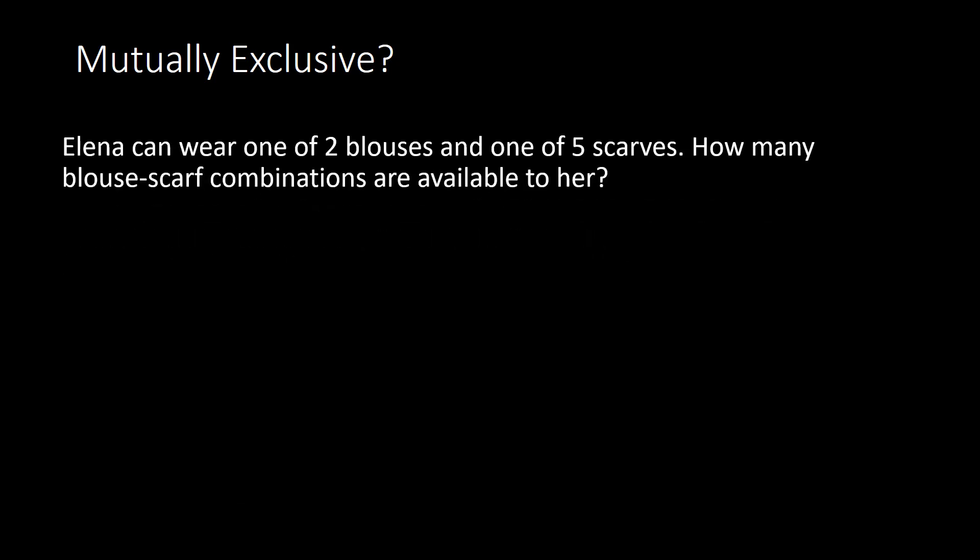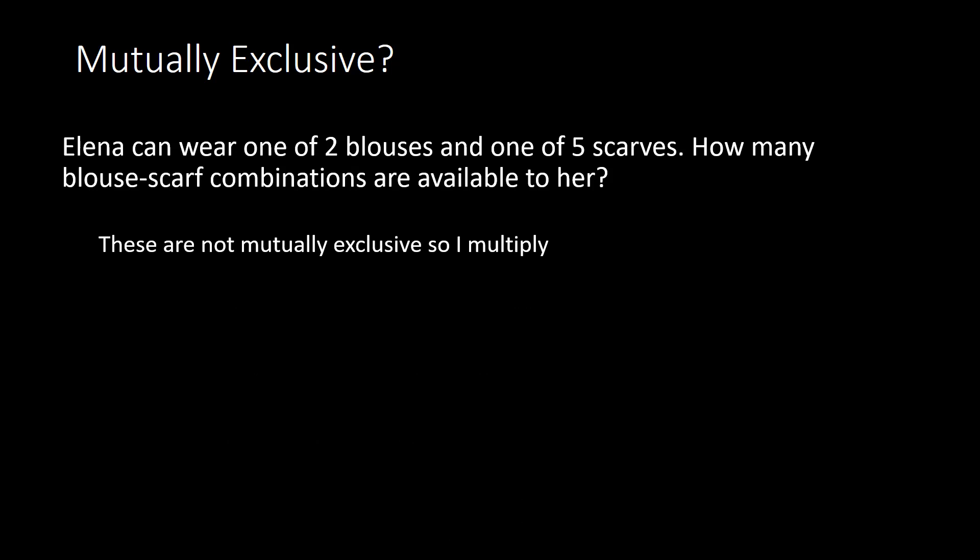Here, Elena can wear 1 of 2 blouses and 1 of 5 scarves. The question is how many blouse-scarf combinations are available to her. To determine the total possibilities, we ask: are these mutually exclusive? Can she wear a blouse and a scarf at the same time? Yes, she can — so these are not mutually exclusive. Therefore we multiply: 2 times 5 gives 10 total possible combinations.